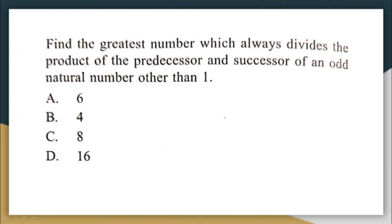Let us solve this question with the help of an example. Let us first consider an odd number — I have taken three. So what is the number that will come before three? That is the predecessor of three, which is two.